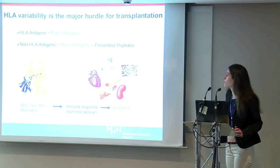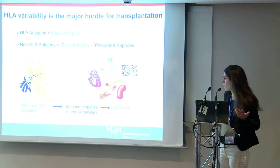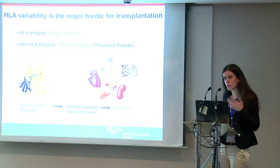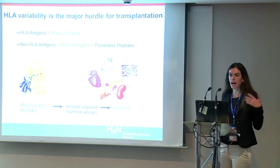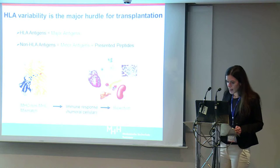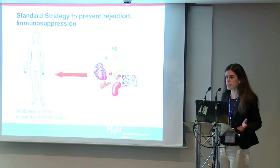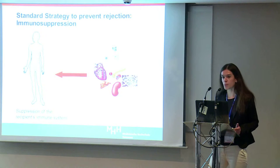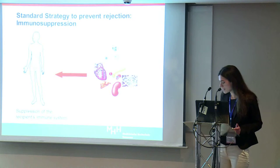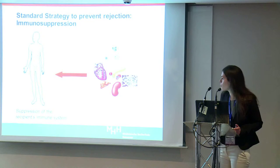However, HLA remains a major hurdle in transplantation because due to its high variability, it is very difficult to match donors with recipients, and therefore allogeneic cells, organs, or tissues will be recognized as foreign and rejected. So far, transplantation has been a successful therapy due to the application of immunosuppressive regimens, but as you know, they have very severe side effects that also compromise patient life.